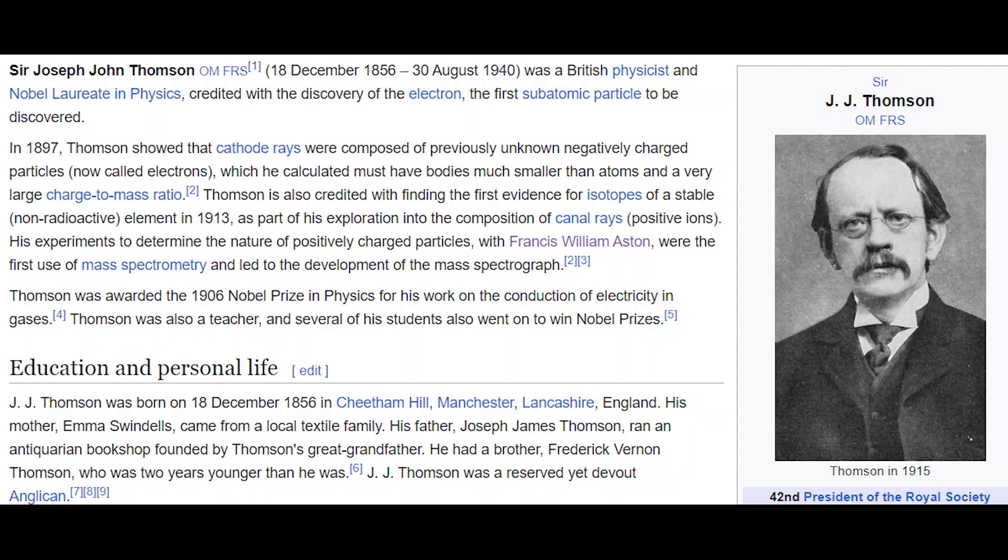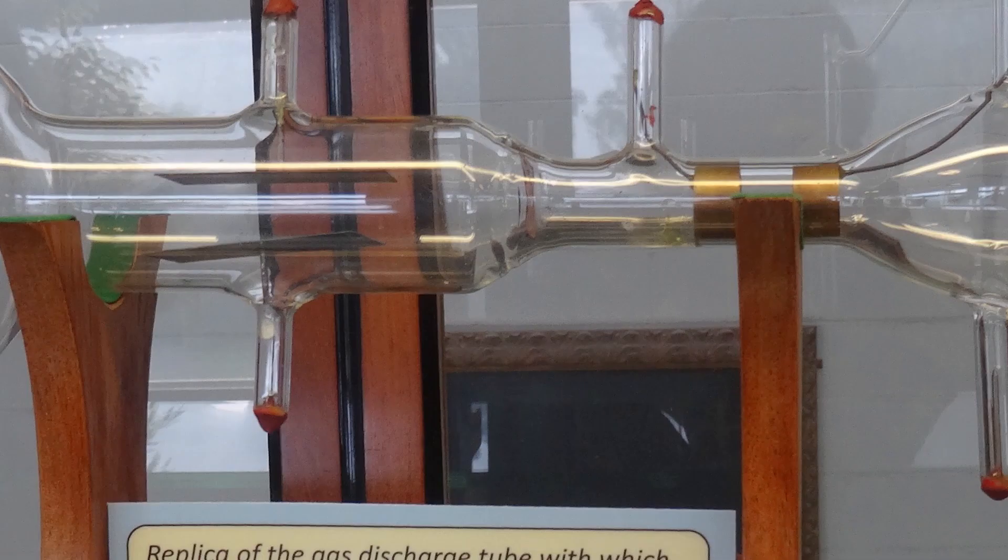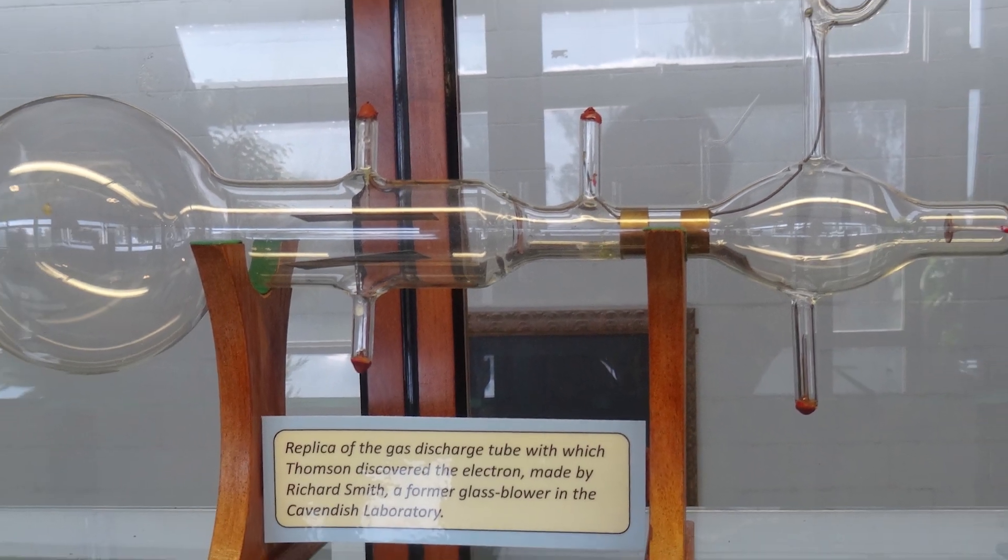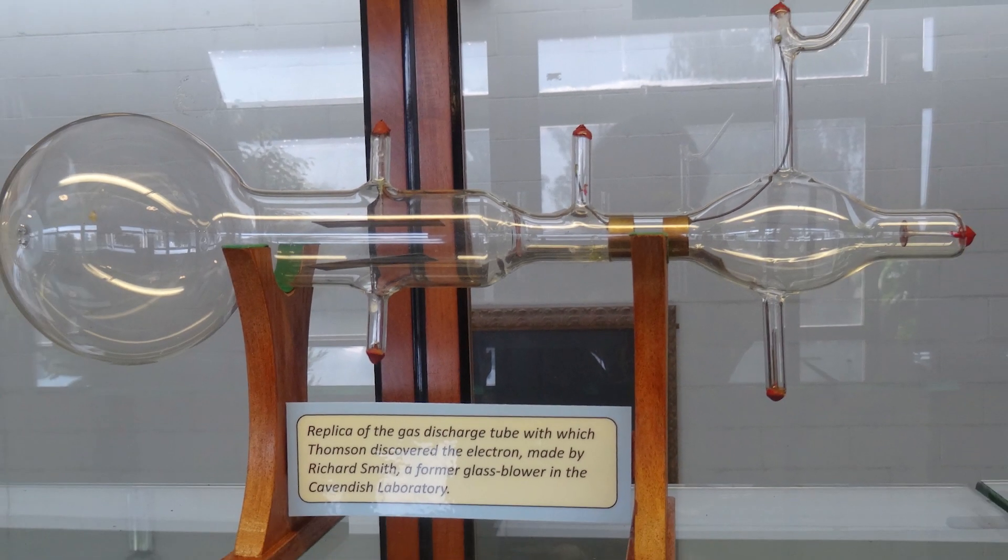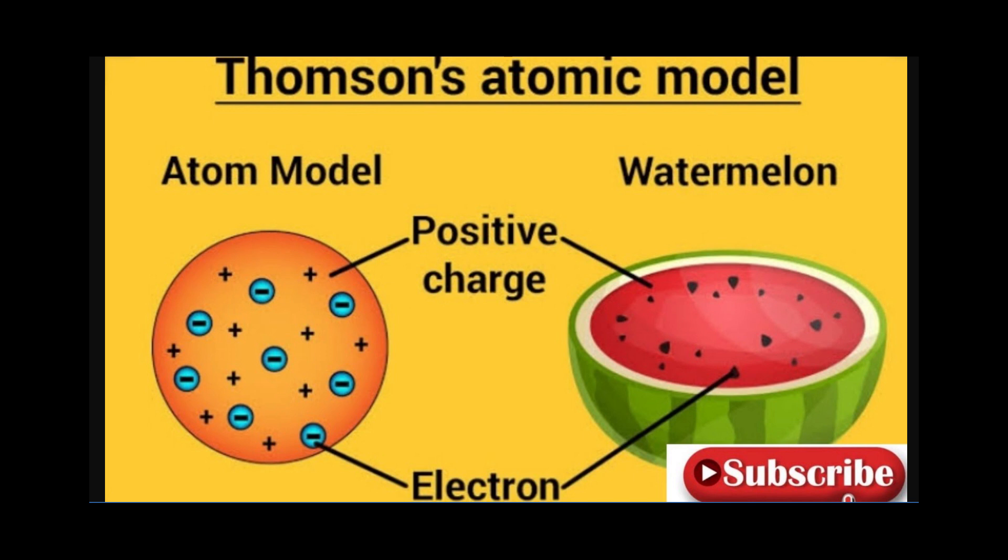After John Dalton, in 1897, J.J. Thomson discovered the electron using cathode ray tube experiments and proposed the plum pudding model of the atom, in which negatively charged electrons were embedded in a positively charged sphere. He gave the reference of a watermelon—just like the seeds of the watermelon are embedded in the red pulp. He considered the black seeds as electrons and the red pulp as a positively charged sphere.